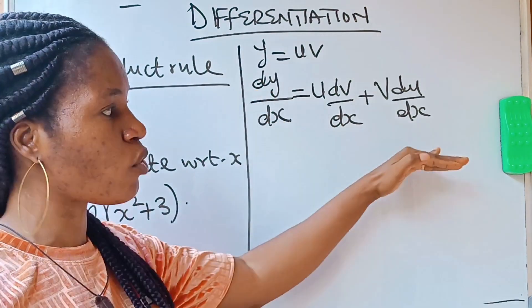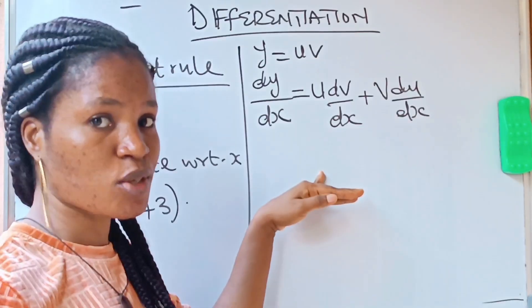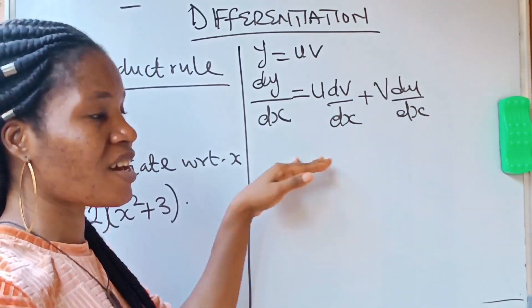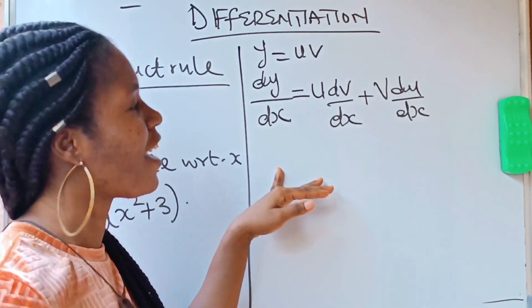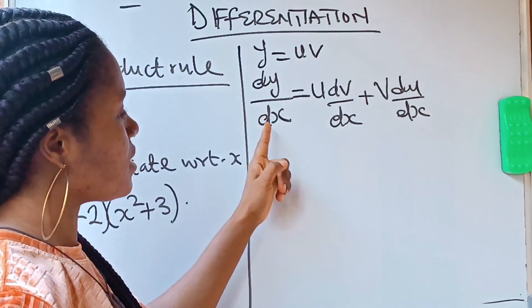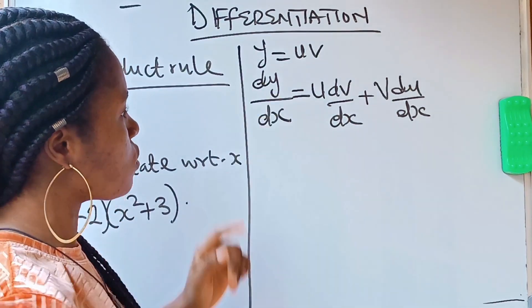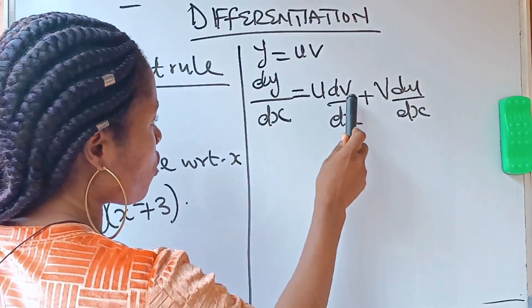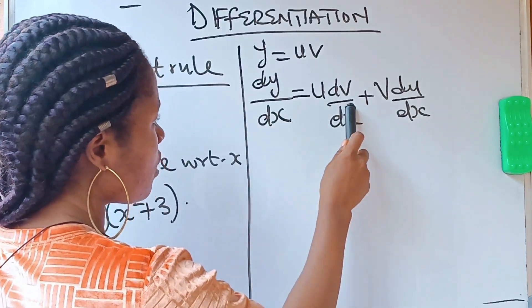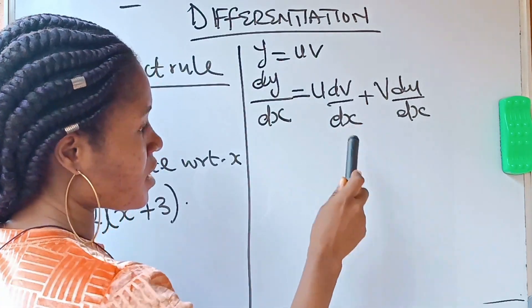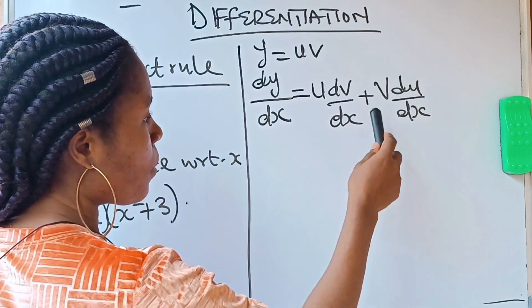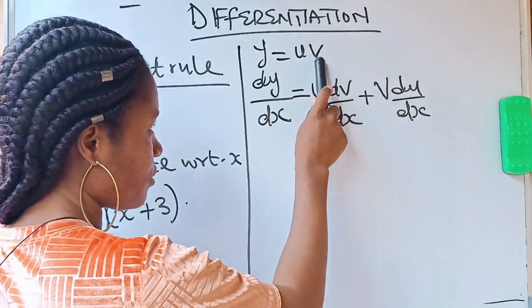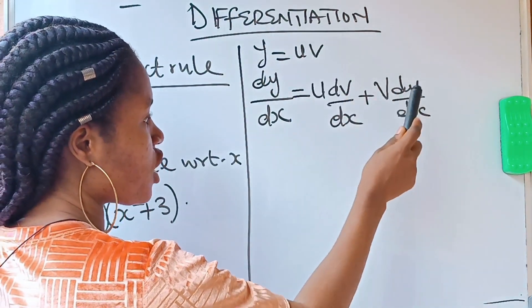dy/dx — I'm going to explain this for those of you that don't really understand. dy/dx is equal to: you write your u, differentiate your v — that is dy/dx, that is the meaning of differentiate — plus you write your v, differentiate your u.